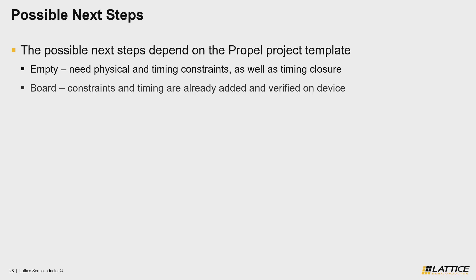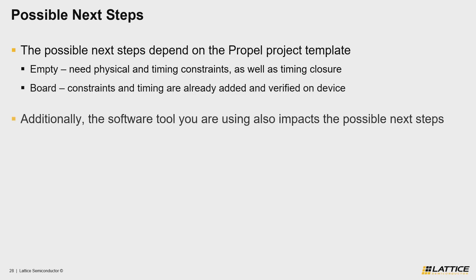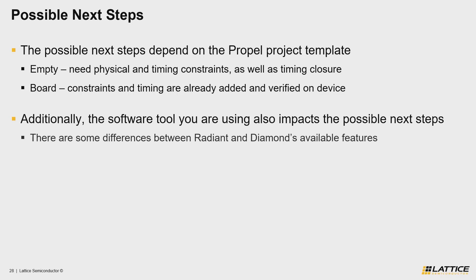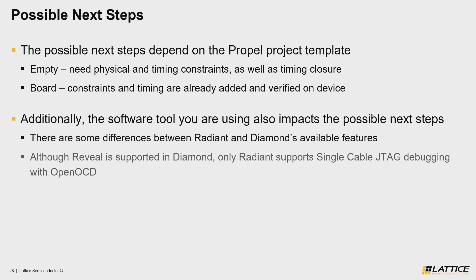Additionally, another condition that determines your possible next steps is the software tool that your Propel project was exported using, because there are some differences between the supported features of Radiant and Diamond. For example, one of the main differences is that although Reveal Analyze is supported in Diamond, only Radiant can be used for single cable JTAG debugging, as Diamond's version of Reveal does not yet support the cable server modifications that enable single cable JTAG debugging with OpenOCD in Propel SDK.